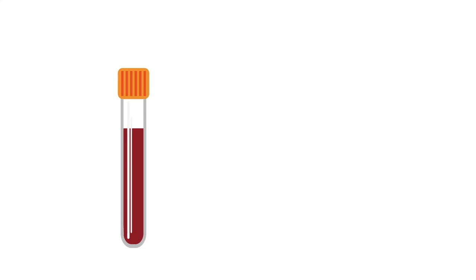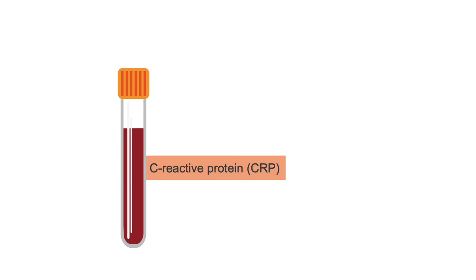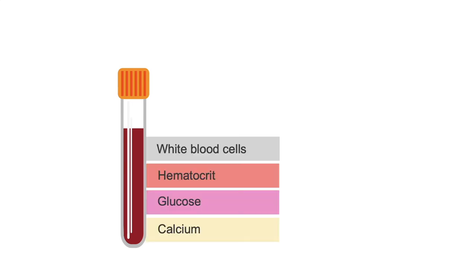Acute pancreatitis causes a release of several inflammatory mediators, including C-reactive protein, or CRP, that can be ordered as a lab test. A CRP level above 150 mg per liter at 48 hours is associated with severe pancreatitis. Patients with pancreatitis may have a leukocytosis and an elevated hematocrit due to hemoconcentration from dehydration from fluid losses into third spaces. Metabolic abnormalities, including elevated or decreased blood glucose levels or decreased calcium levels, may also be seen.